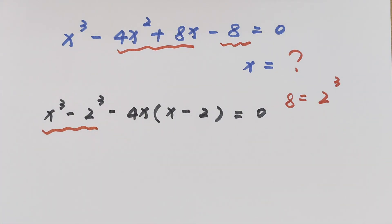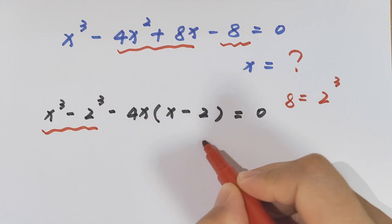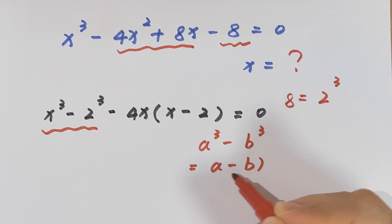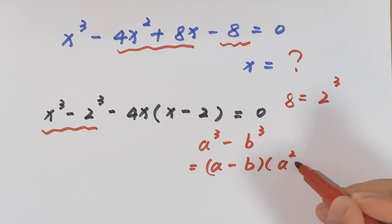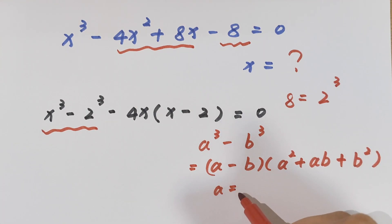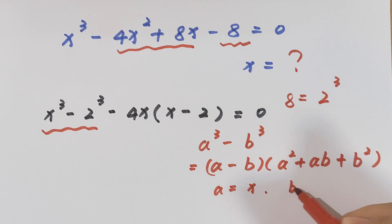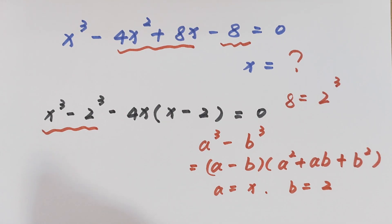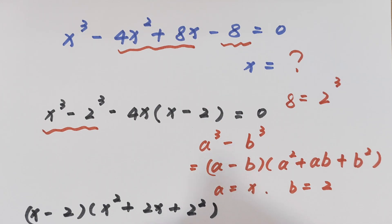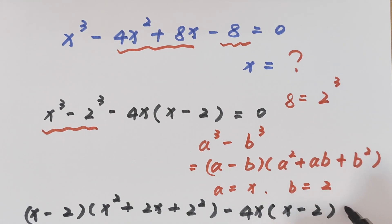Now we apply the difference of cubes rule: a cubed minus b cubed equals (a minus b) times (a squared plus ab plus b squared). Here a is x and b is 2, so it will be equal to (x minus 2) times (x squared plus 2x plus 4) minus 4x times (x minus 2) equals 0.